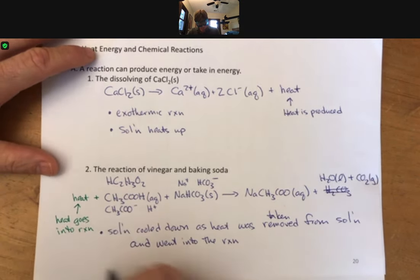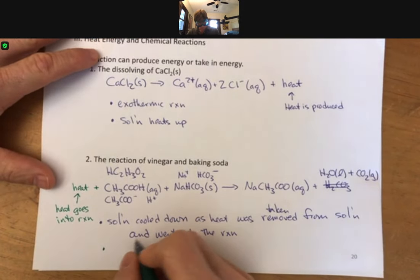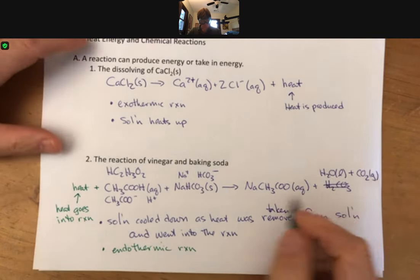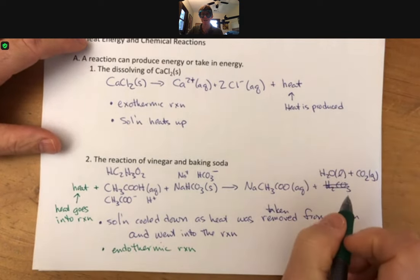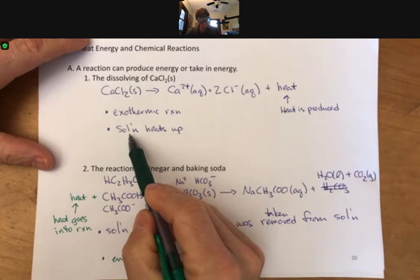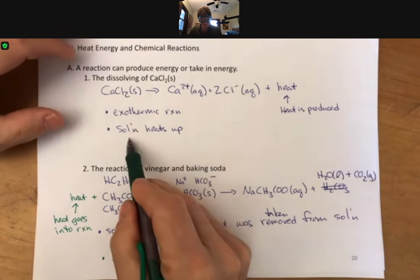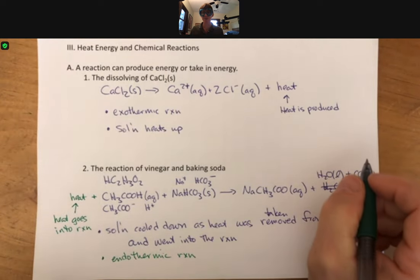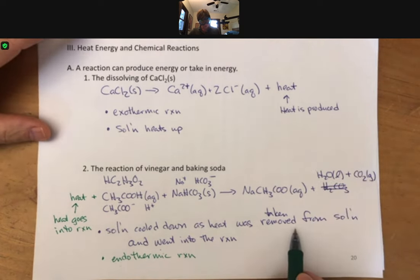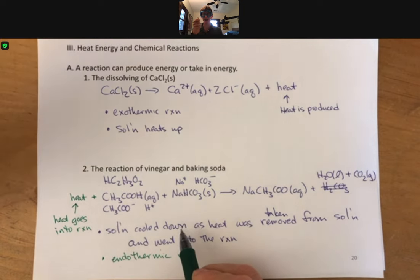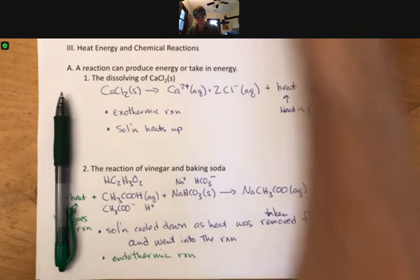What we call this when heat goes into a reaction is we call it an endothermic reaction. Endo means into, thermic means heat. Heat goes into the reaction. When heat is produced, it's an exothermic reaction and that heat comes out of the reaction and actually heats up the solution. We have an endothermic reaction. That means that the solution cools down because the energy from the solution is taken from it and goes into the reaction.